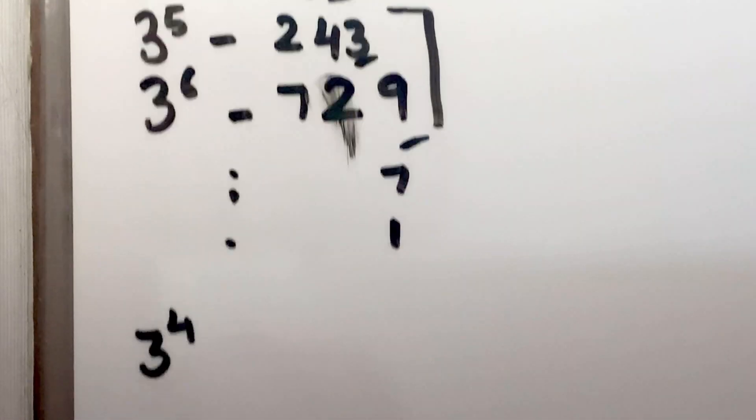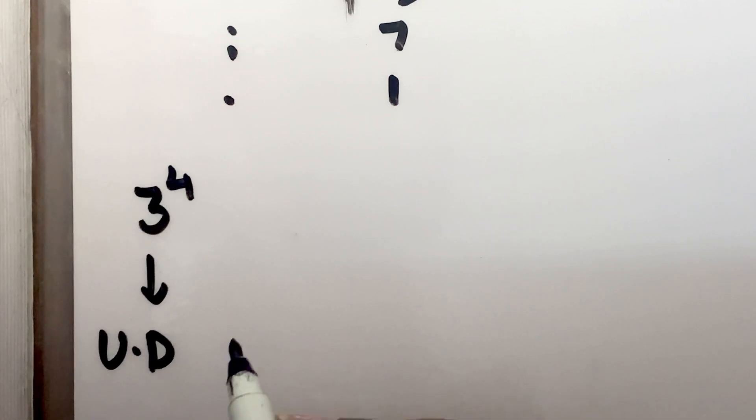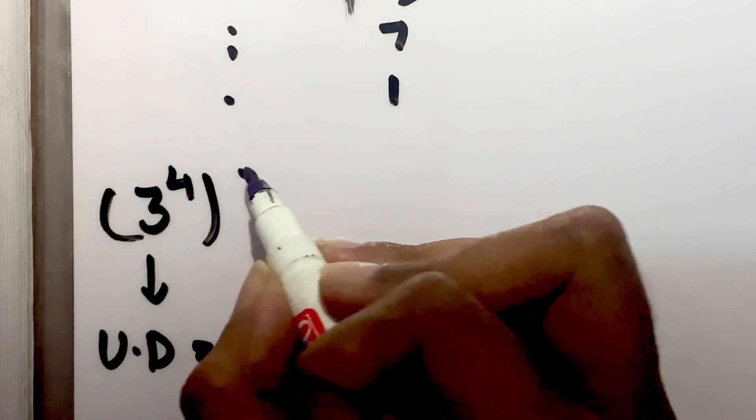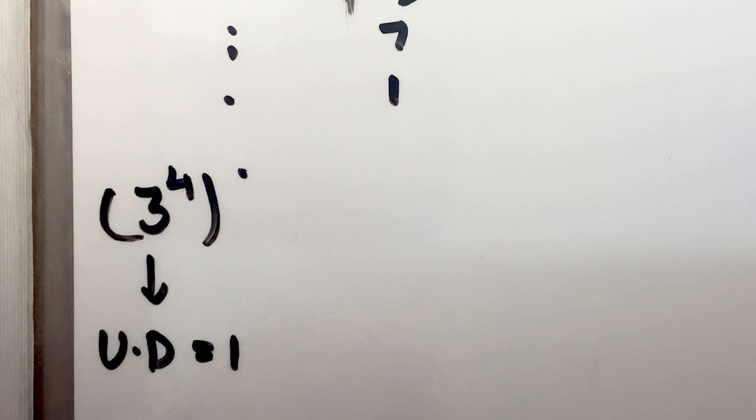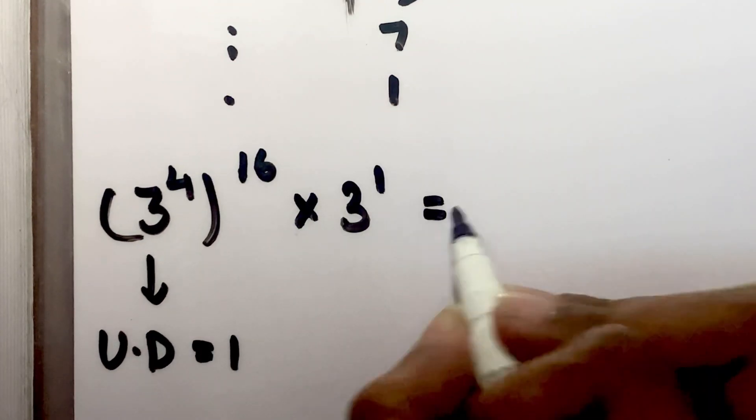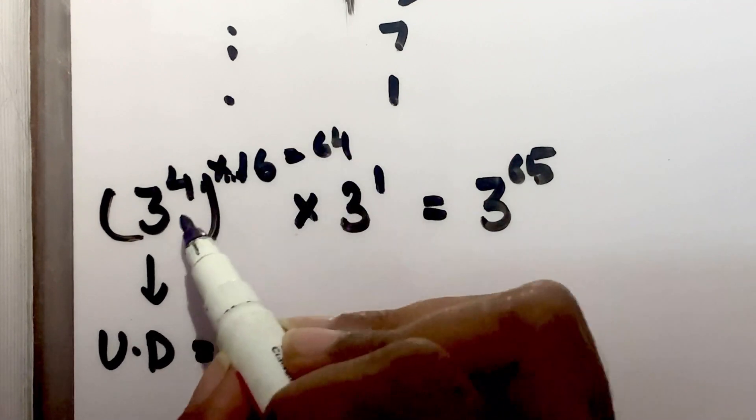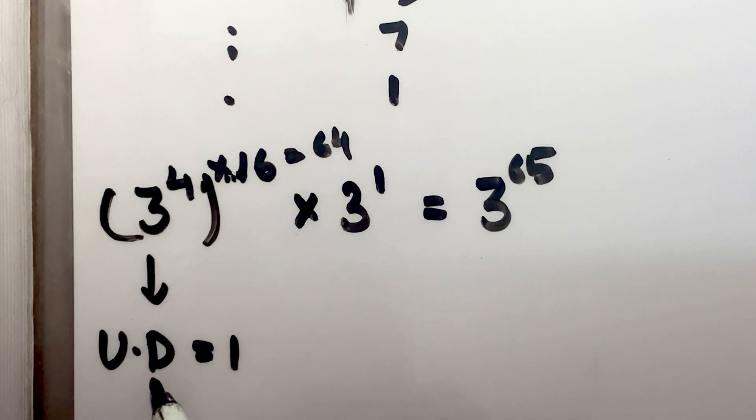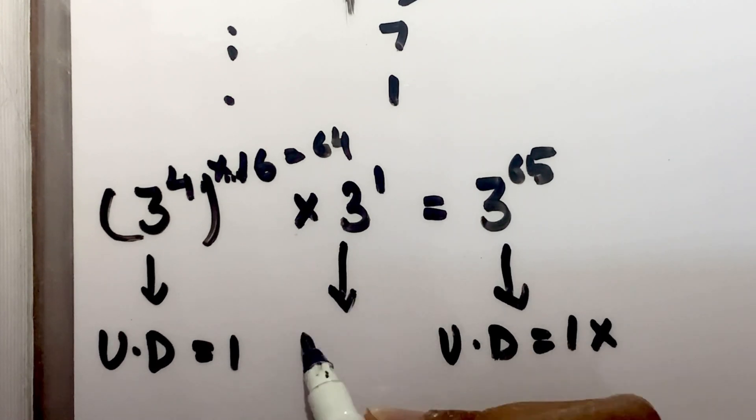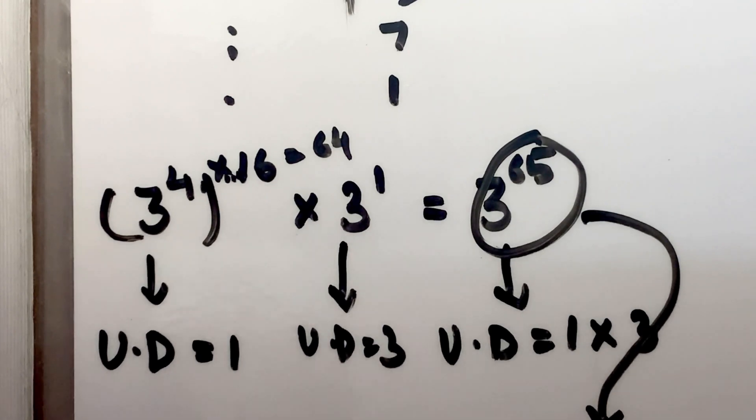3 raised to the cyclicity number 4. Now within 3 raised to 65, 3 raised to 4 has unit digit 1, which is 81. So either the unit digit is 1. Let's say 3 raised to 4 into 16, into 3 raised to 1 equals 3 raised to 65, correct? Because here exponents multiply: 4 into 16 is 64. So 3 raised to 64 into 3 raised to 1 equals 3 raised to 65. Unit digit of 3 raised to 65 will be the product of unit digits of these terms. Unit digit of 3 raised to 64 is 1, into unit digit of 3. So 1 into 3, the unit digit of 3 raised to 65 is 3.